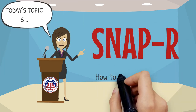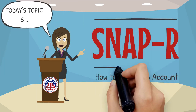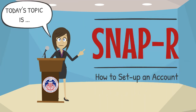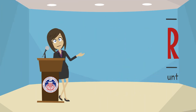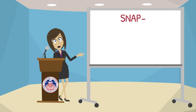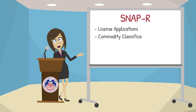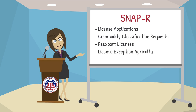Today's topic is SNAP-R and how to set up an account. SNAP-R is the Bureau of Industry and Security's secure web portal for exporters to submit export license applications, commodity classification requests, re-export licenses, and the notification requirement under license exception agricultural commodities.